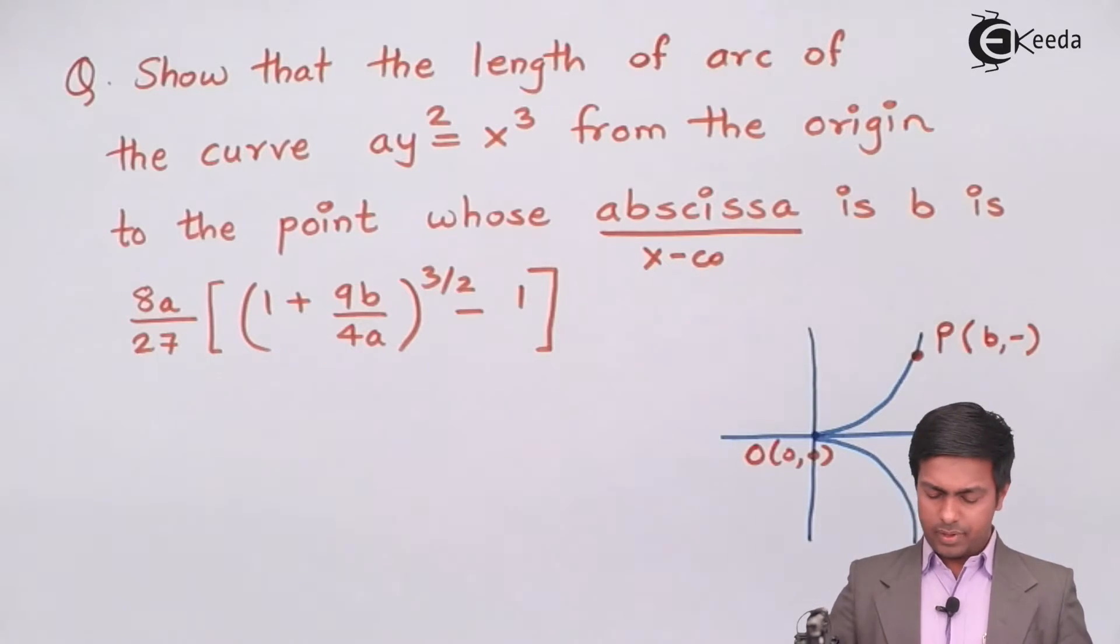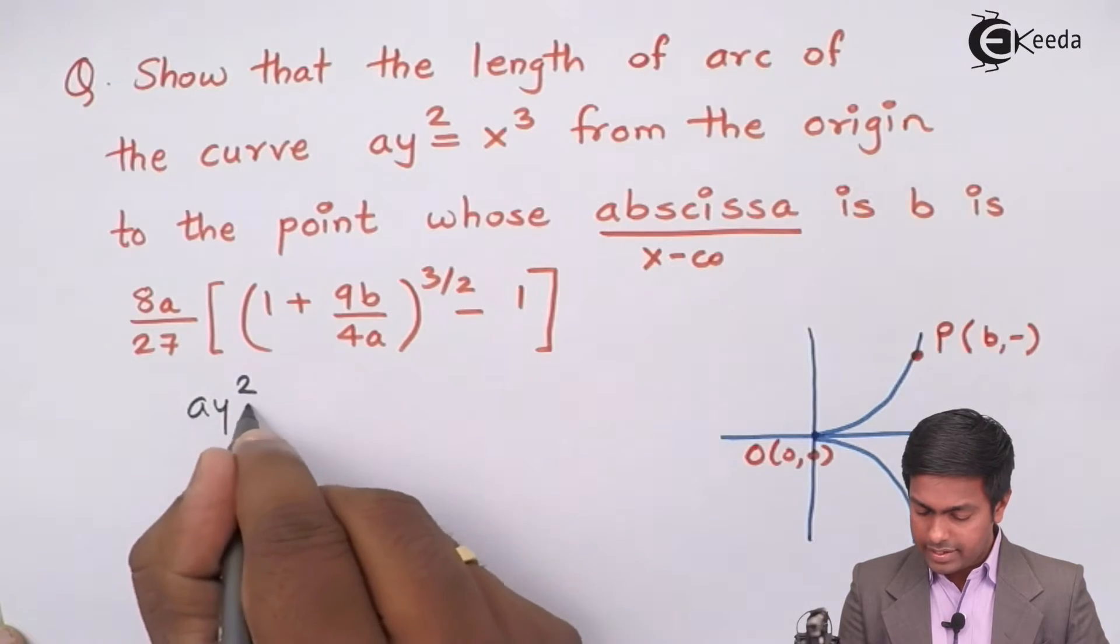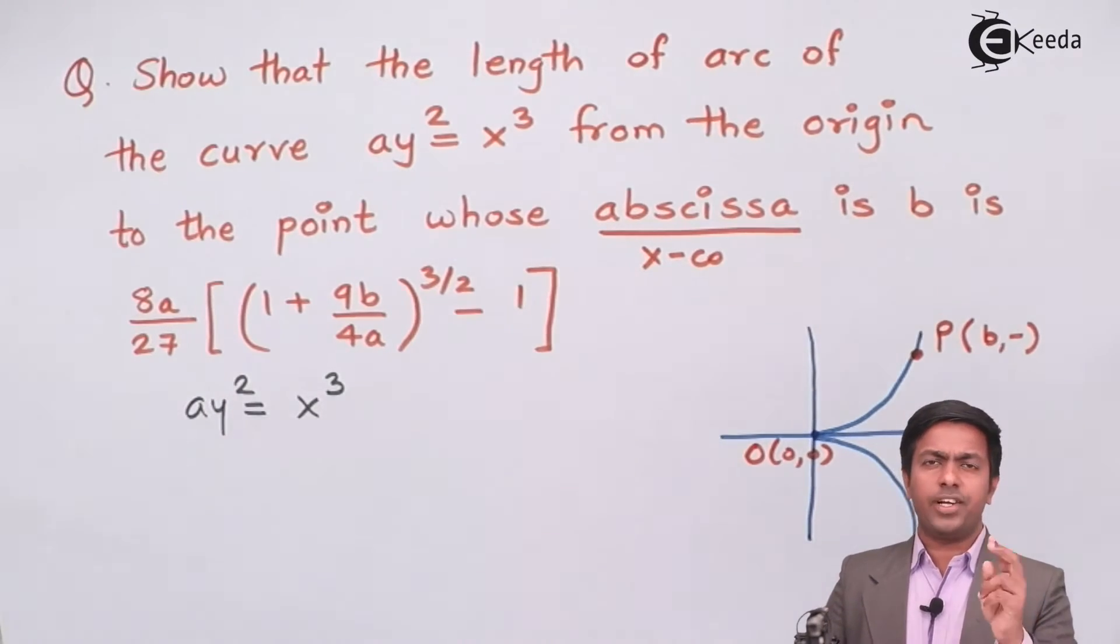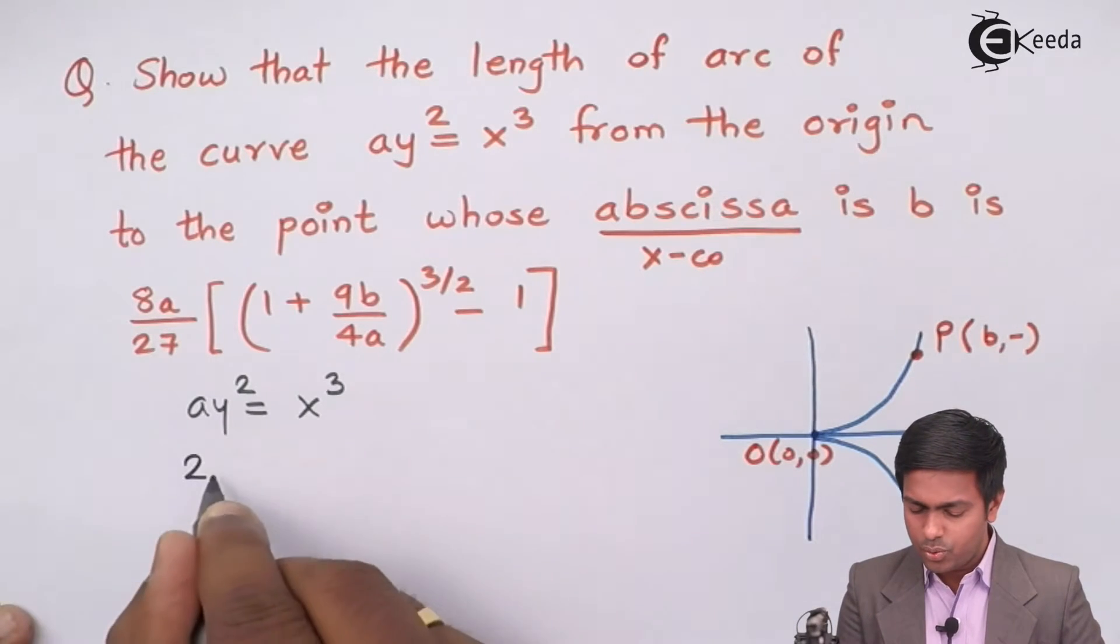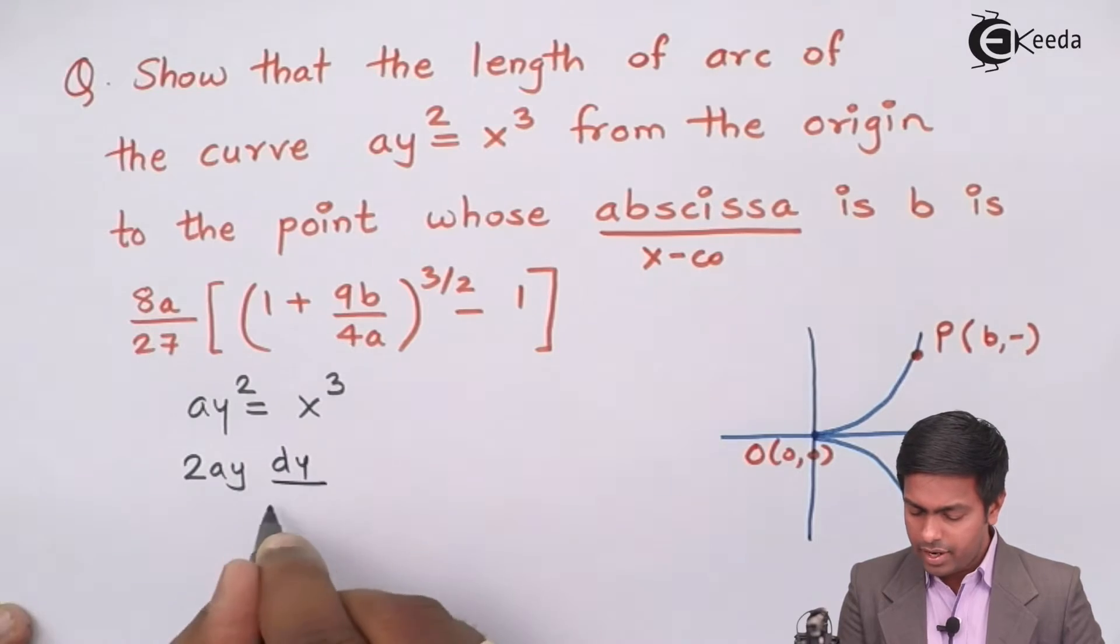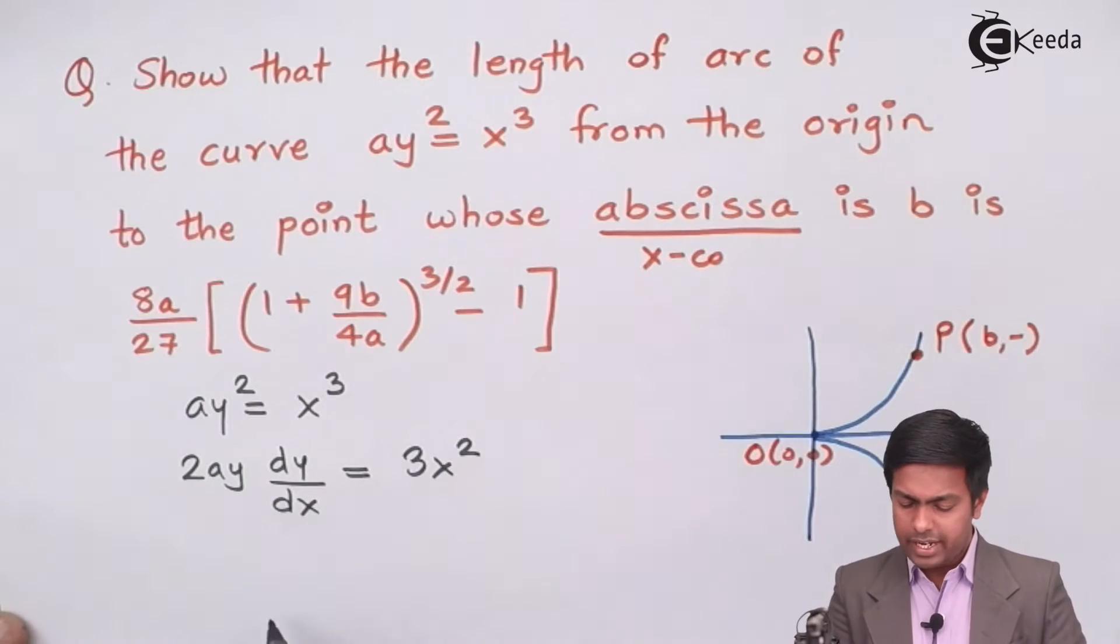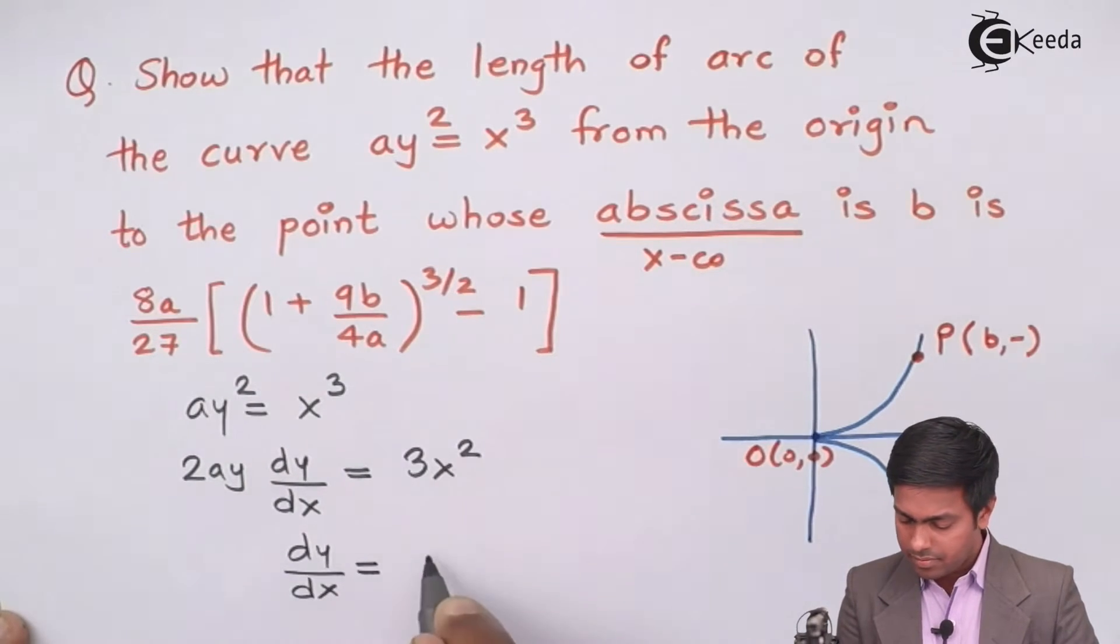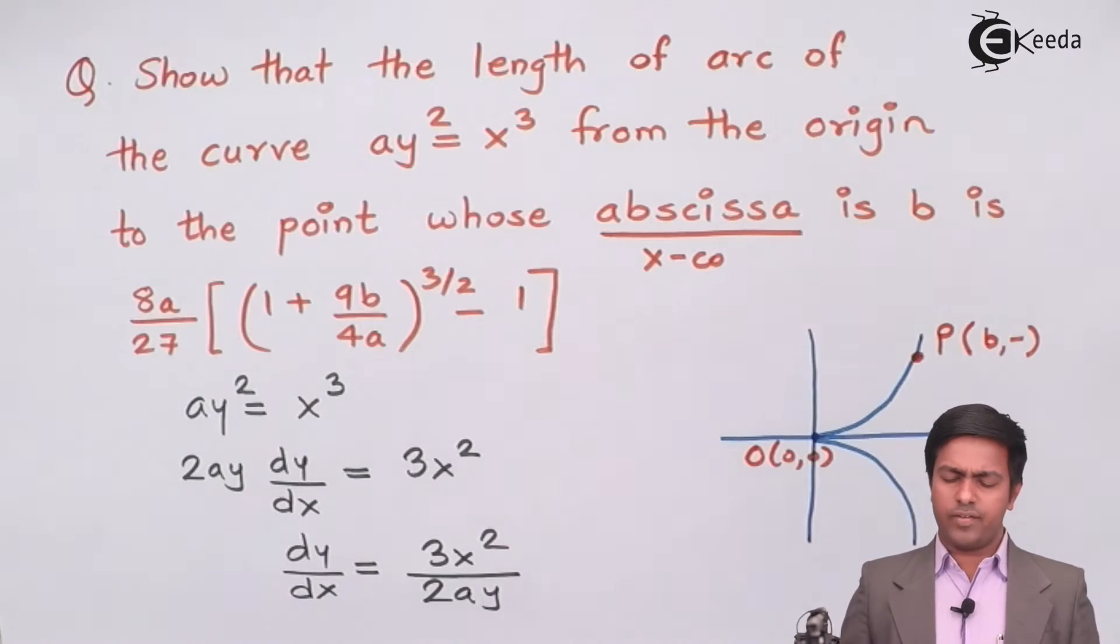So first of all I will say here the value of a y square is equal to x cube. Now to get the value of dy by dx I will differentiate both sides with respect to x. So here we will get 2 a y dy by dx is equal to 3 x square. Now we can say that dy by dx is 3 x square upon 2 a y.